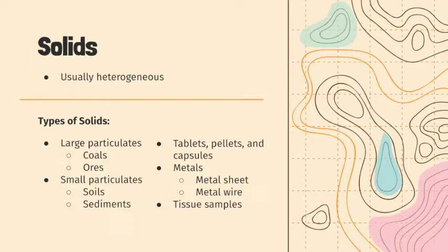Common examples of solid samples include large particulates like those found in ores, smaller particulates like soils and sediments, tablets, pellets, and capsules used in pharmaceutical products, metals like metal sheets and wires, and tissue samples from biological specimens. It's important to differentiate each of them since each form of solid is collected and sampled differently.